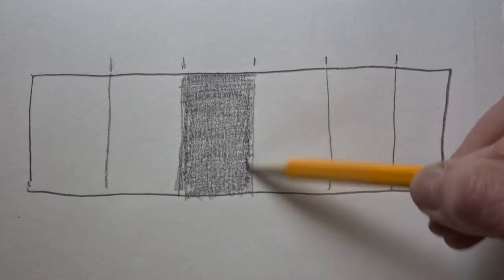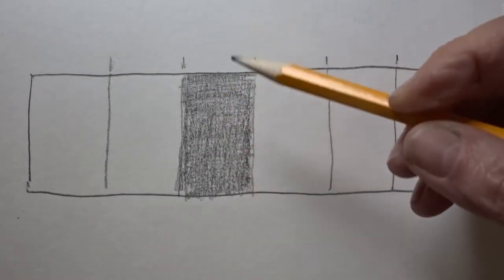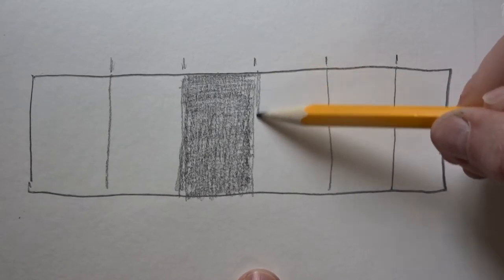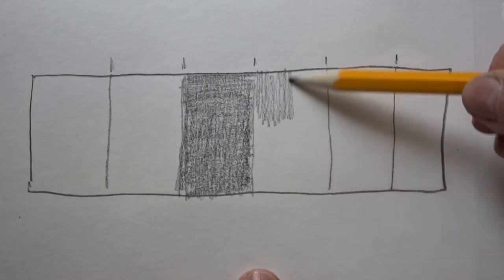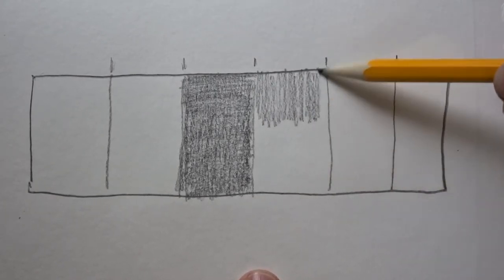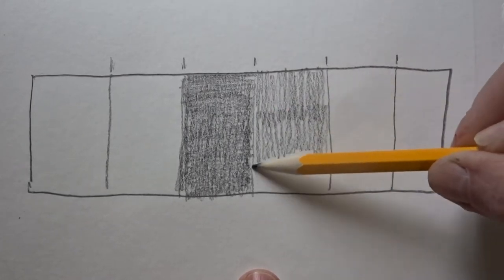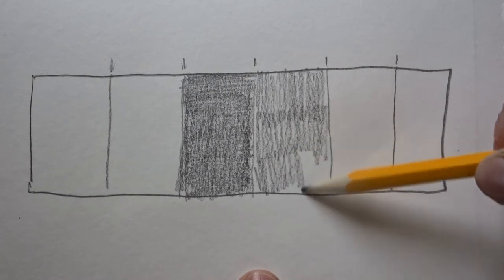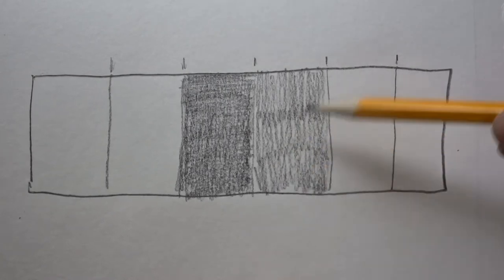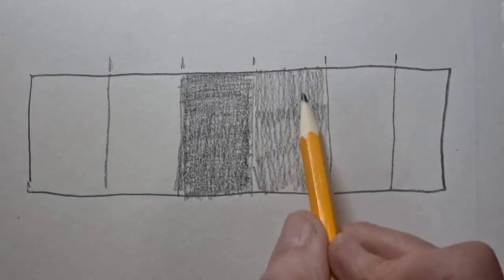The key to doing a value scale with really nice smooth values are layers. So if I lay this down again, now my next box is going to be a little darker, but you notice I'm not making it darker. I'm not pressing really hard. That will dent your paper. You don't want that.